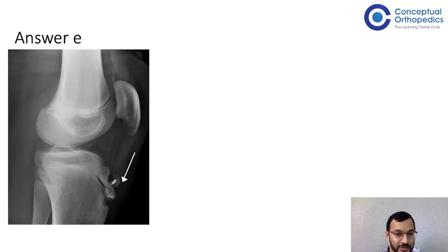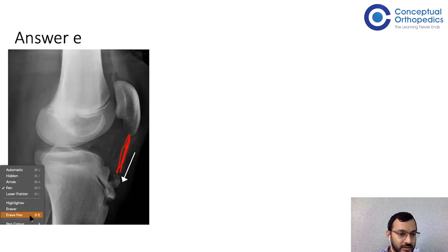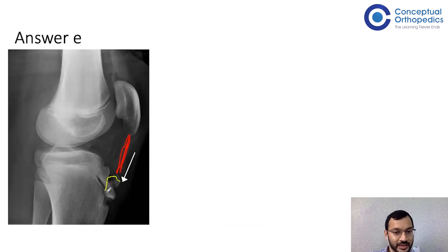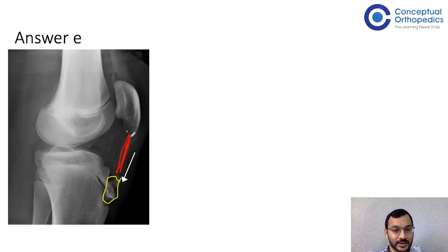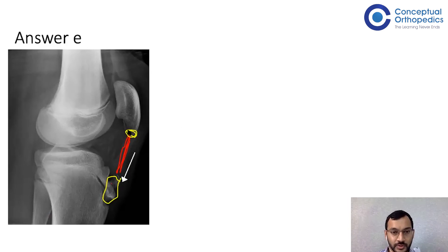To clarify with a diagram: the patellar tendon runs from the patella down to the tibial tuberosity. Tendonitis can occur at either end — at the tibial tubercle end it is Osgood-Schlatter's disease, and at the inferior pole of the patella it is Sinding-Larsen-Johansson syndrome.